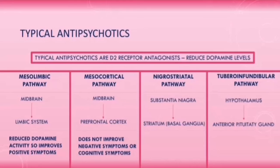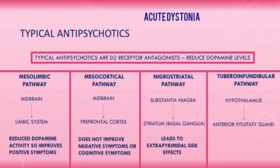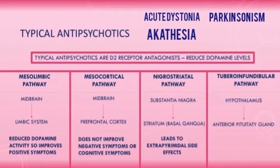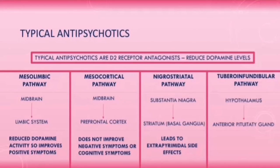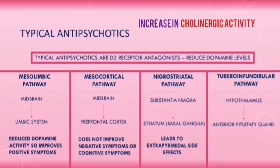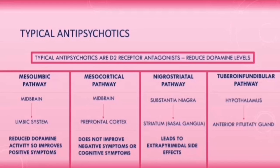When typical antipsychotics reduce dopamine levels in the nigrostriatal pathway, this can lead to extrapyramidal side effects, including acute dystonia, akathisia, parkinsonism, and tardive dyskinesia. This occurs because reducing dopamine activity in this pathway leads to an increase in cholinergic activity, which contributes to these side effects.